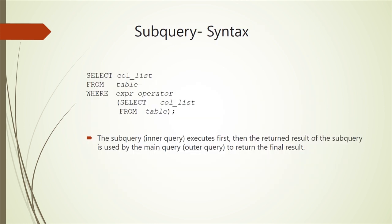The syntax for writing a subquery is: SELECT column list FROM table list WHERE expression and operator — and then the subquery is placed here. In our example, this subquery returns the salary of the Chin employee, and the outer query returns all employees who earn more than Chin.